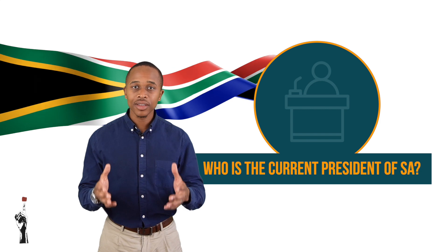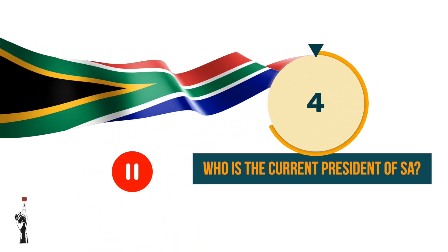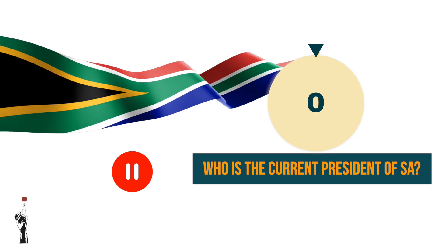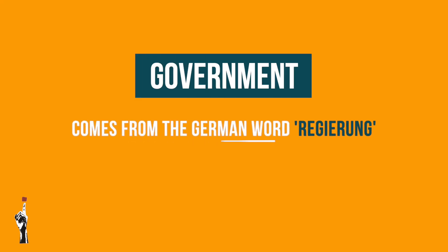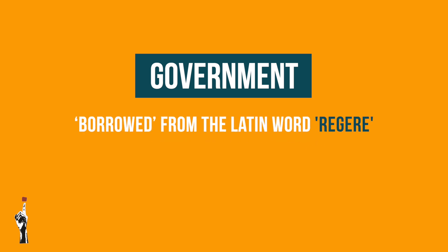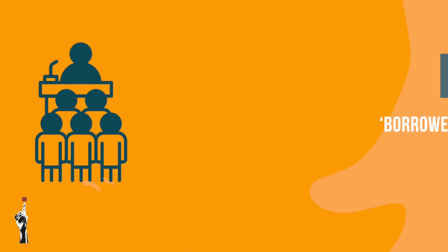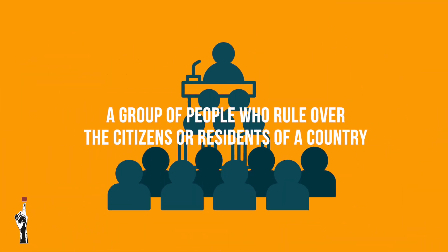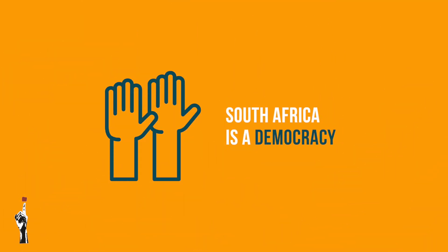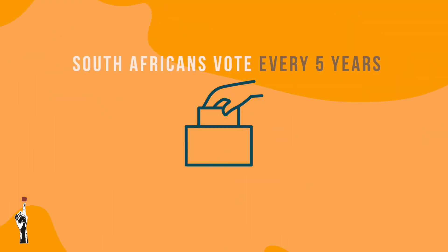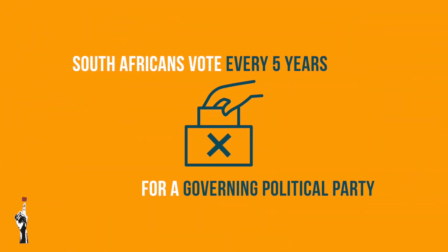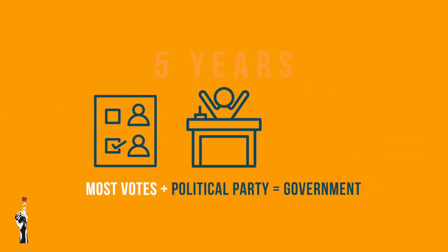So what does the word government mean? The word government comes from the German word, which in its turn borrowed the word from the Latin word 'regere,' which means to direct, or in the broader context, to lead or rule. The government is therefore a group of people who rule over the citizens or residents of a country. South Africa is a democracy, which means we as citizens decide who we want as rulers, by voting every five years for the political party that we believe can run the country best.